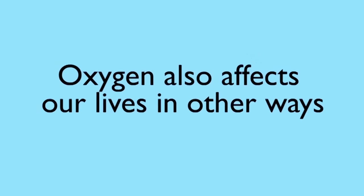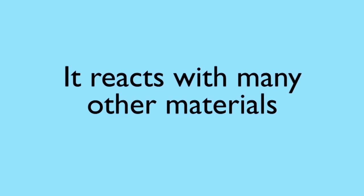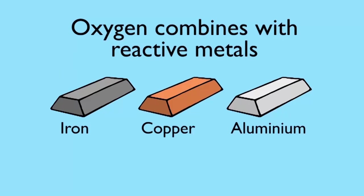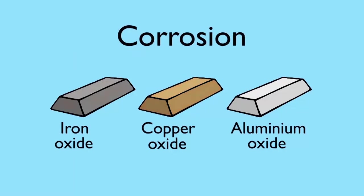The oxygen in the atmosphere also affects our lives in other ways. It reacts chemically with a number of other materials. Oxygen will combine with reactive metals to form metal oxides. This is called corrosion. Most metal oxides are useful as they produce a hard protective layer.